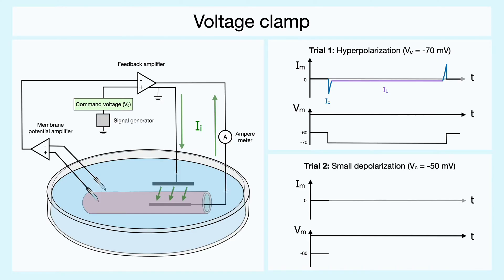In the second trial, let's set the command potential at negative 50 millivolts to slightly depolarize the membrane. As expected here, we get the opposite relation with the currents flowing in opposite direction and with the leak channel still being the only ones responsible for the resistive current.